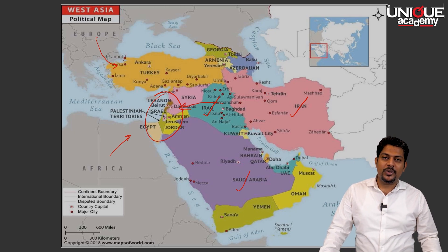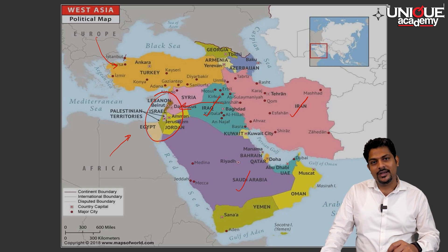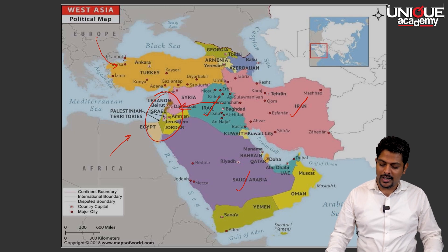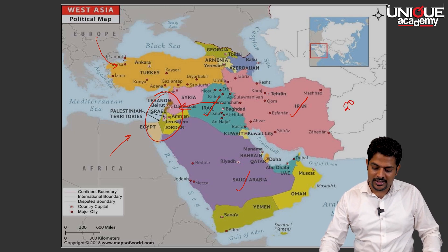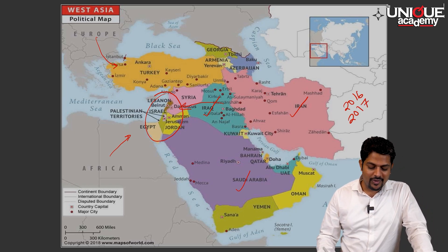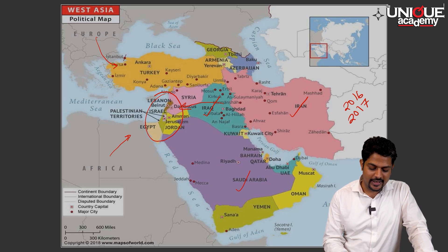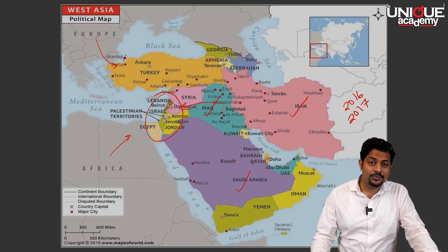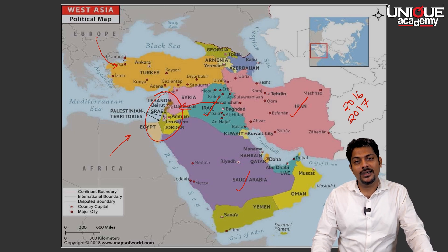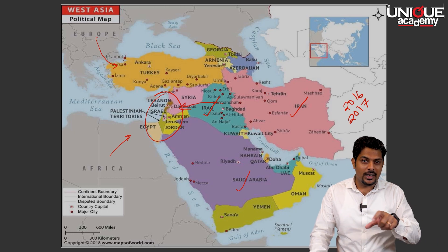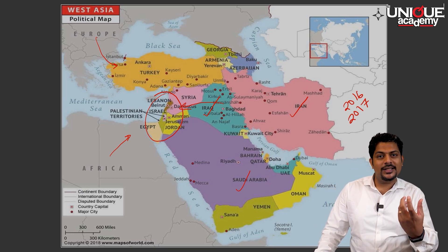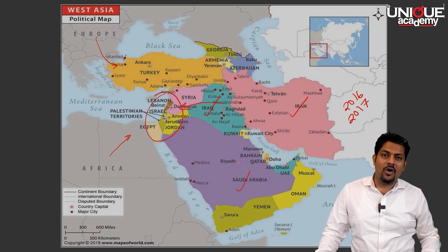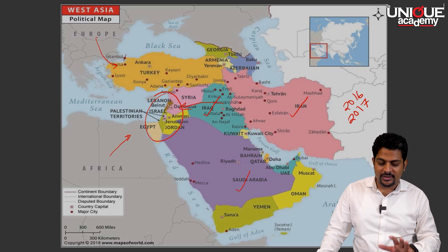We are looking at this particular map because UPSC has asked questions about mapping in every year's question paper. If you go back, in the 2016 and 2017 civil service examination prelims, you will find a question on this particular area. In one year they asked which country has an opening to the Mediterranean Sea. In other question papers they are trying to create questions from different dimensions, but the topic of that question is this particular region.